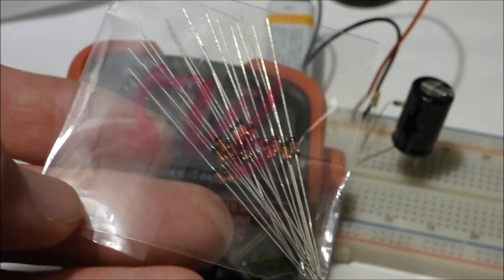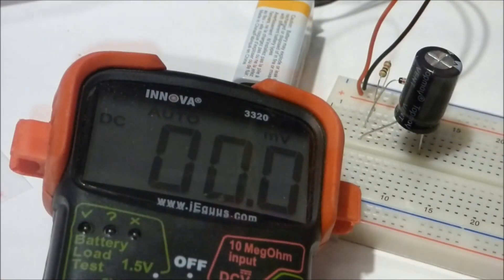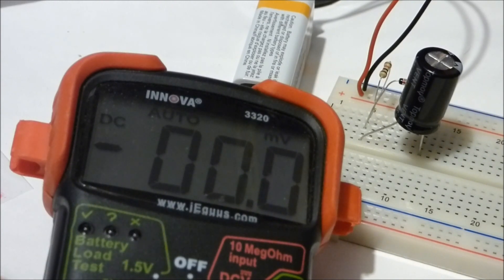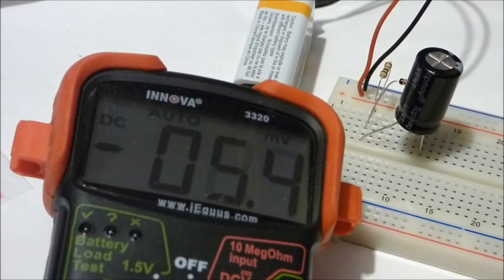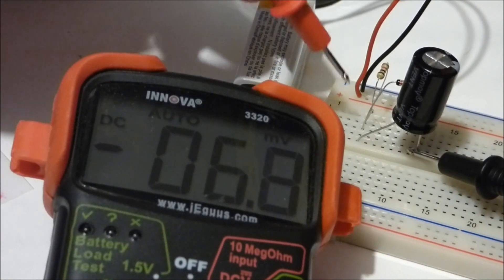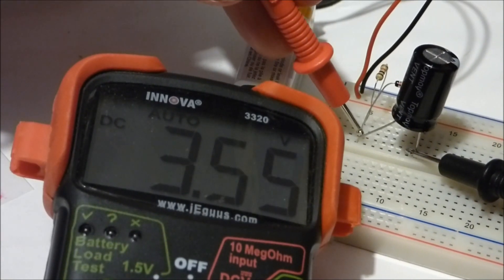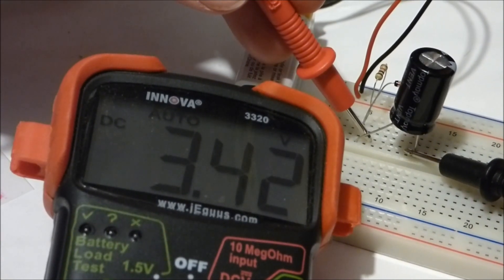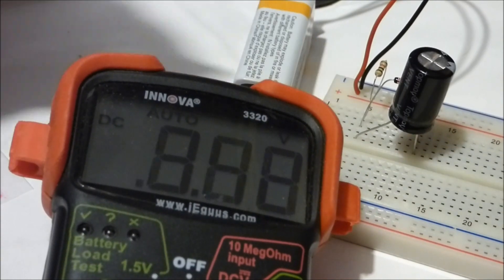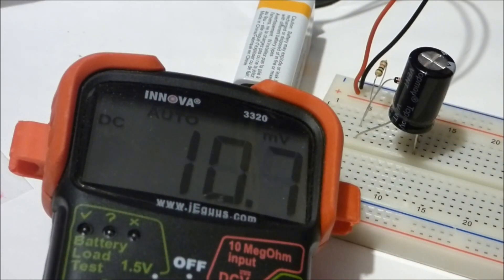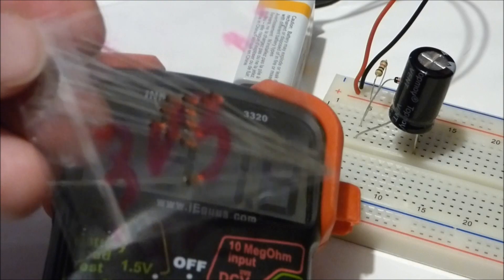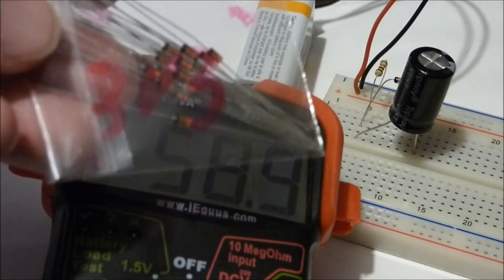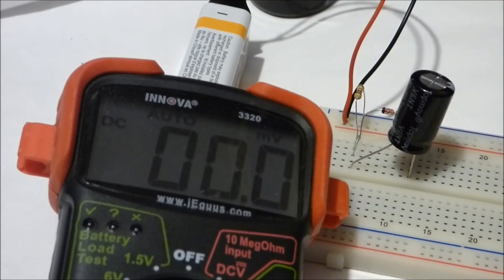Now I swapped out that 5.6 volt Zener diode with another one. You'll see it's about 3.4 volts, and in fact I'm using this 3.3 volt, so it says 3v3.